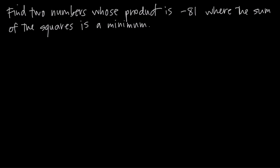In this video, we're doing an applied optimization problem where we've been asked to find two numbers whose product is negative 81 — in other words, when we multiply them together we get negative 81 — and where the sum of their squares is a minimum. The first thing we want to do with an applied optimization problem is always look for the word maximum or minimum and figure out what we're trying to maximize or minimize. What we see is that the sum of the squares is a minimum, so we're trying to minimize the sum of the squares.